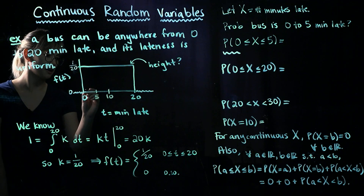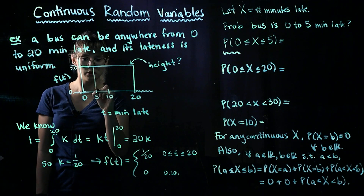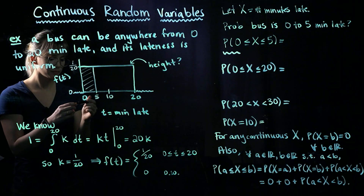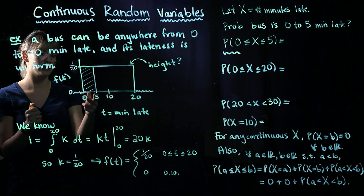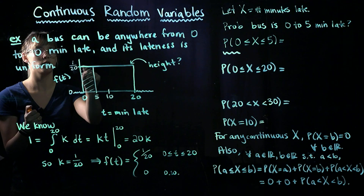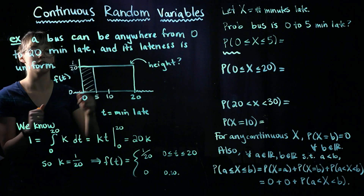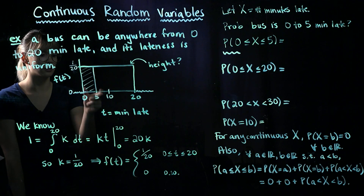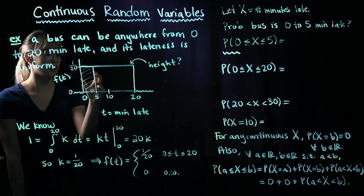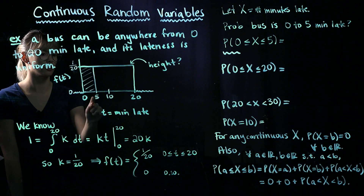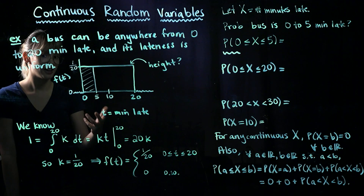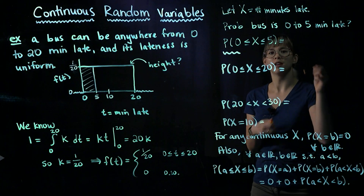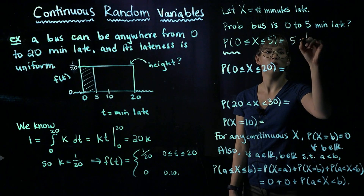We want the probability that the bus is between 0 and 5 minutes late, so we integrate over this function between 0 and 5. Since we have a uniform distribution, this is just a rectangle, and we can calculate this area easily: area equals length times width. The height is 1/20 and the width from 0 to 5 is 5.